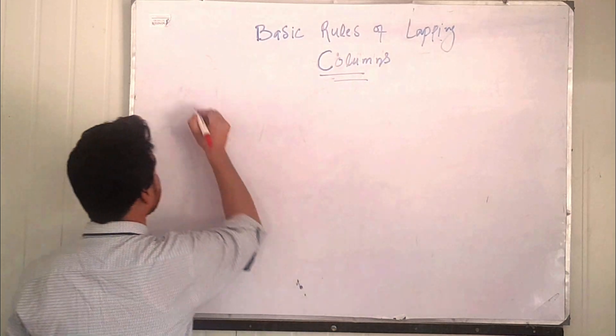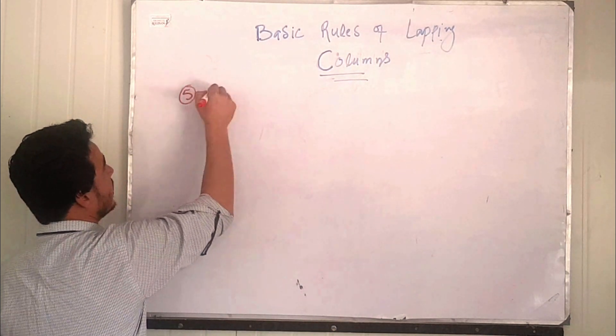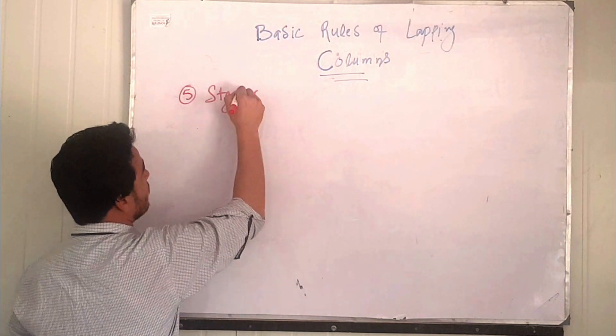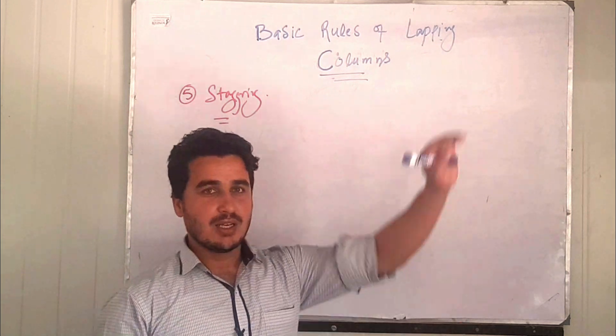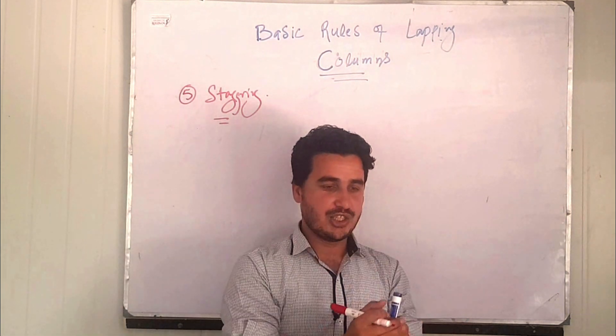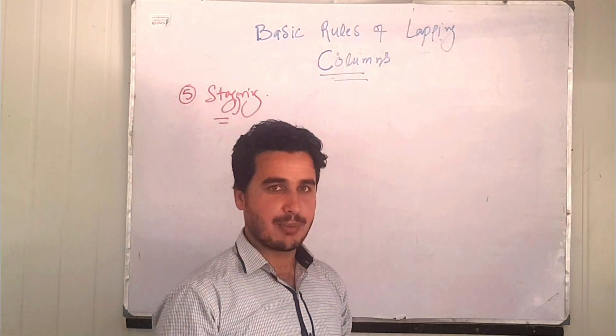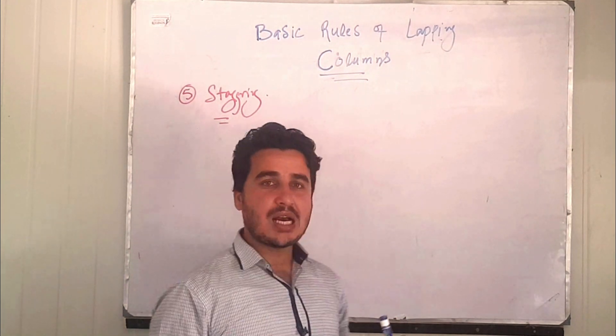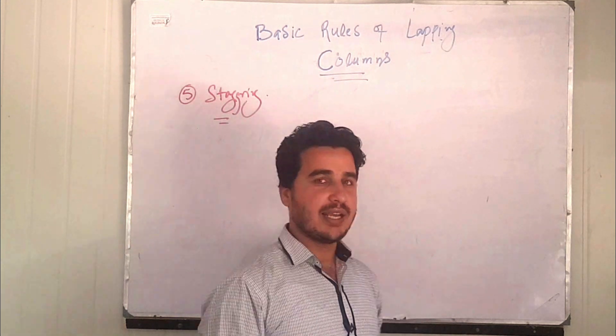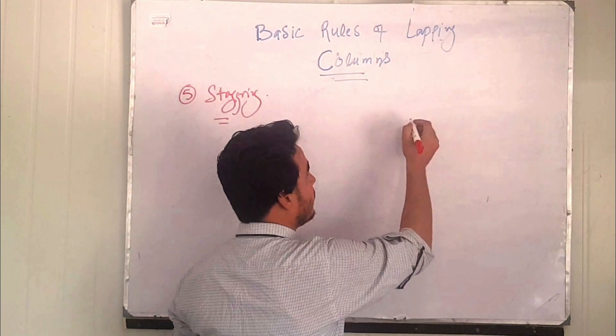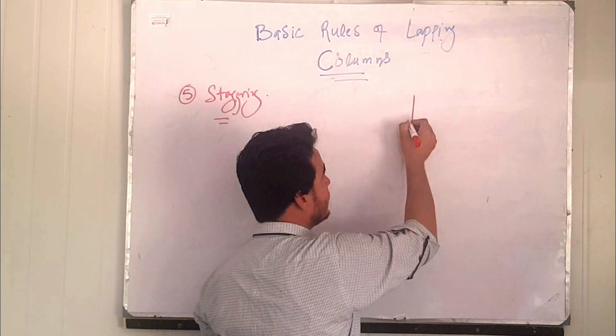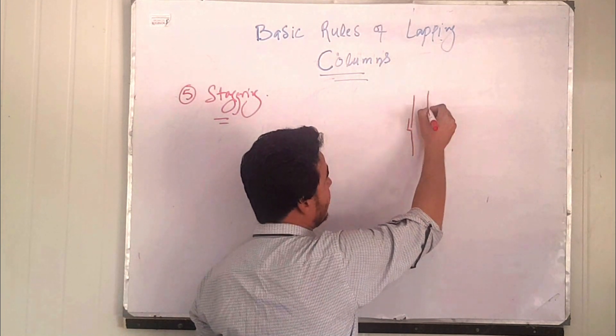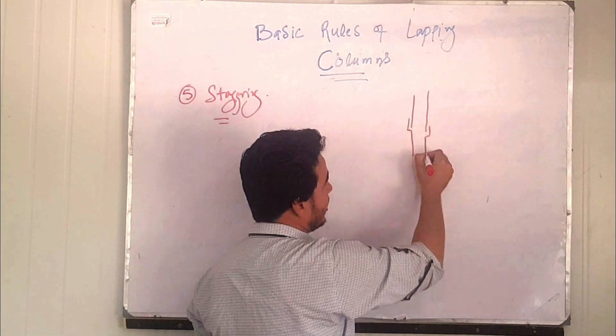Now rule number fifth: staggering. What does staggering mean? If you are a construction engineer or site engineer, you would have heard of staggering phenomena. Staggering means alternating bars. If you are giving lap to this bar somewhere here, then to another bar you will have to give the lap somewhere here.